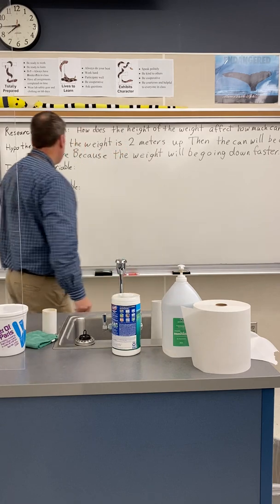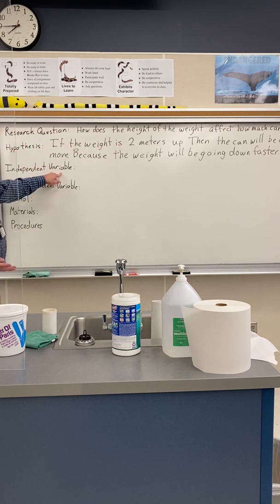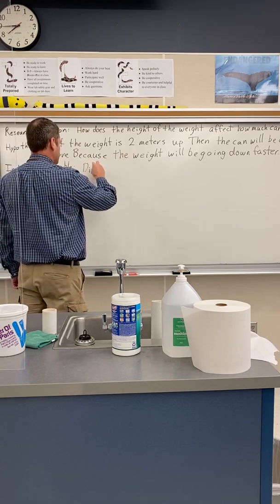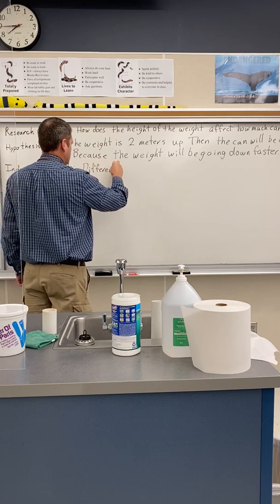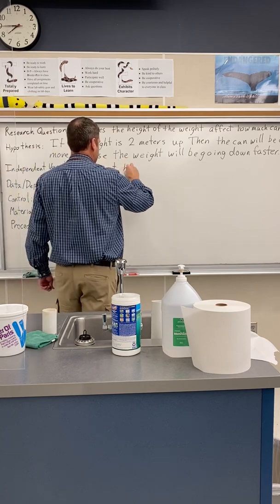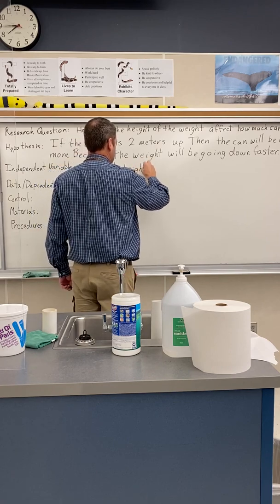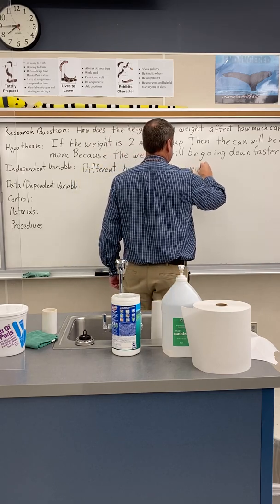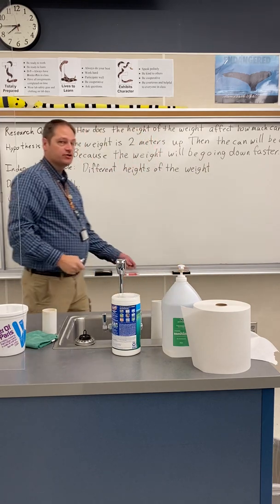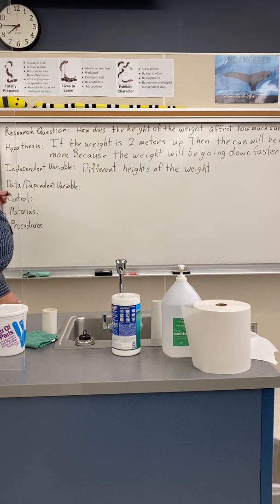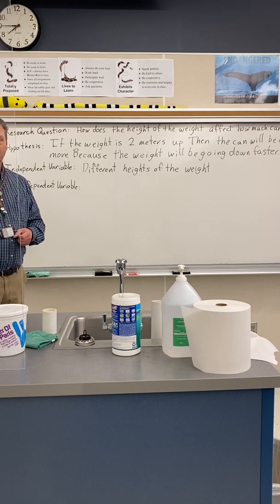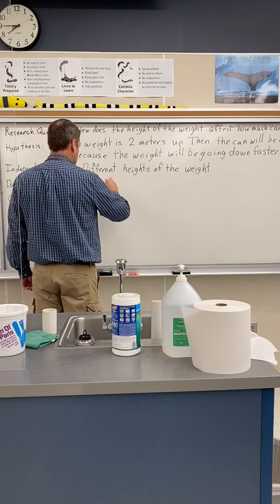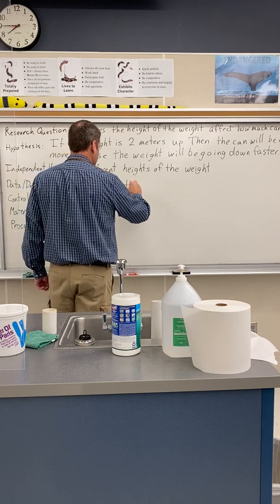The independent variable is what we're changing — the height of the weight. The dependent variable is how we're going to measure our data: we're going to measure how much the can gets crushed, in centimeters.